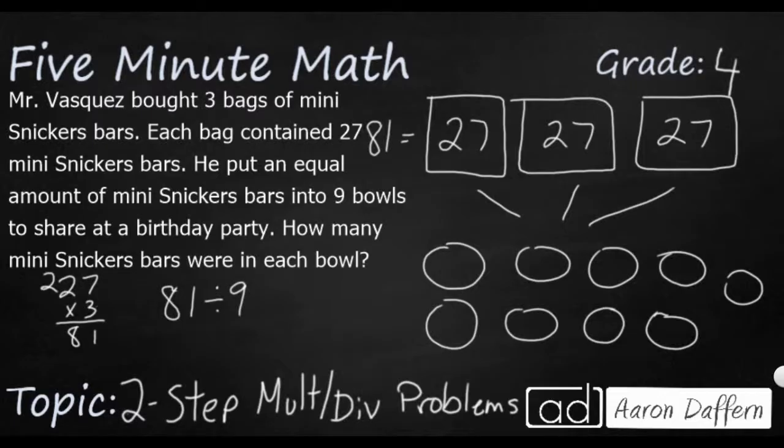Well, thankfully, that is a multiplication fact I know. If you're not sure of it, you might think of it like this as a related fact family. Nine times what equals eighty-one? The answer is going to be nine. So we are just going to put nine in each. Nine, eighteen, twenty-seven, thirty-six, forty-five, fifty-four, sixty-three, seventy-two, eighty-one.